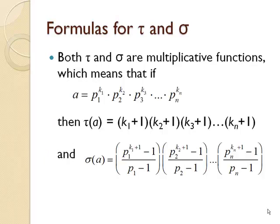Both tau and sigma are multiplicative functions which means that if we have A being some number that has a prime factorization given here then tau of that number is to find the tau values of each prime to power and multiply those together. So K sub 1 plus 1 times K sub 2 plus 1 times K sub 3 plus 1 all the way up to K sub n plus 1. For sigma of A we find sigma of each prime factor to a power and then multiply those together.